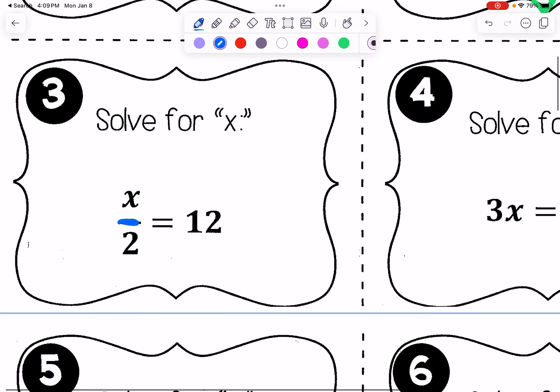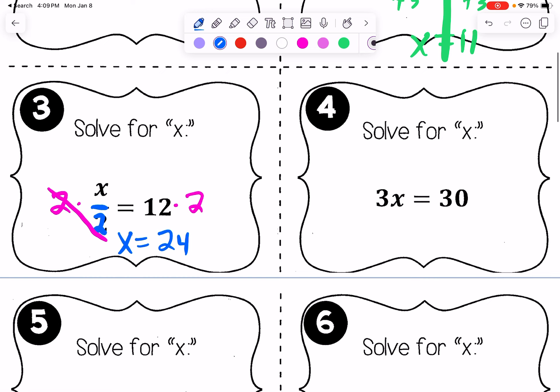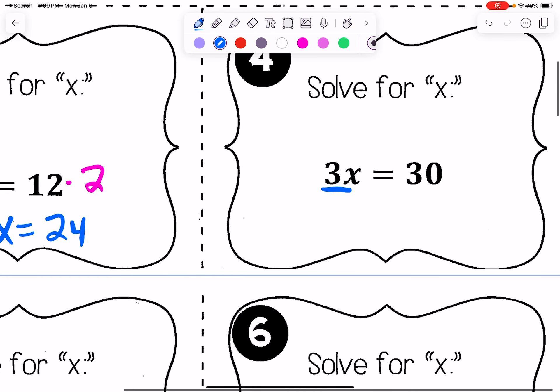This one, our x is divided by 2, so we're always doing the inverse operation, or that just means what's the opposite of divide by 2? It's multiply by 2. 2 divided by 2 becomes 1, so we get x equals 24. Number 4, we will divide by 3 on both sides. x equals 10.